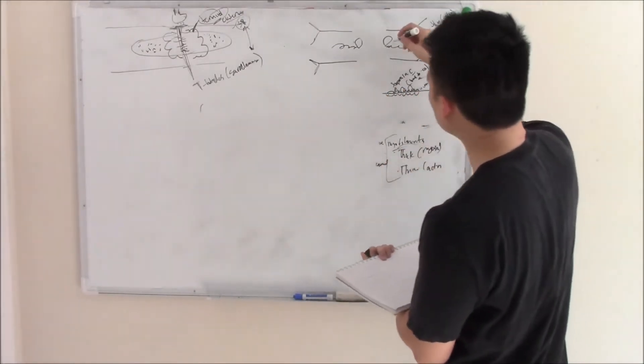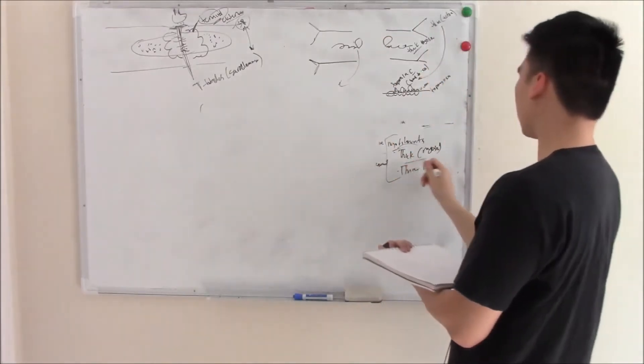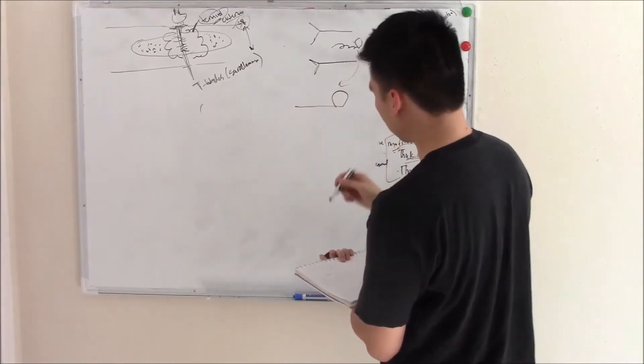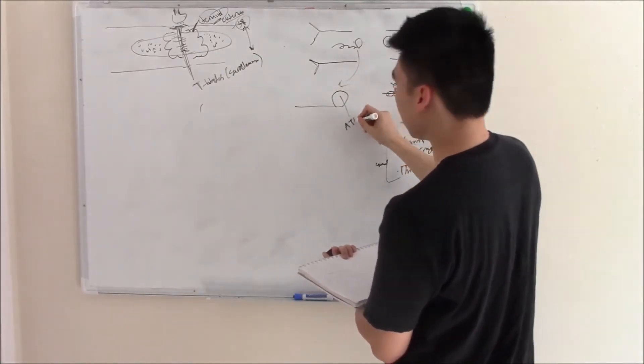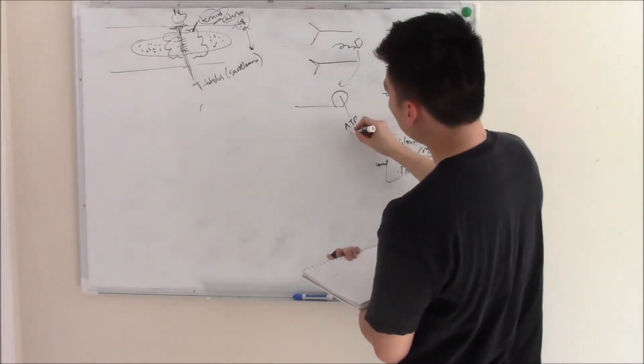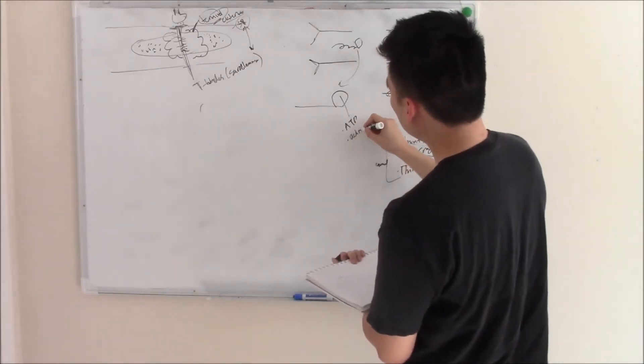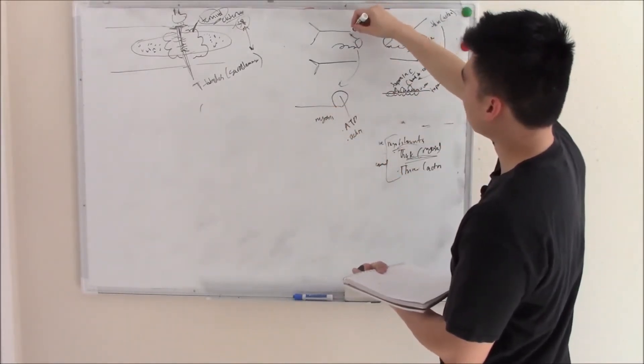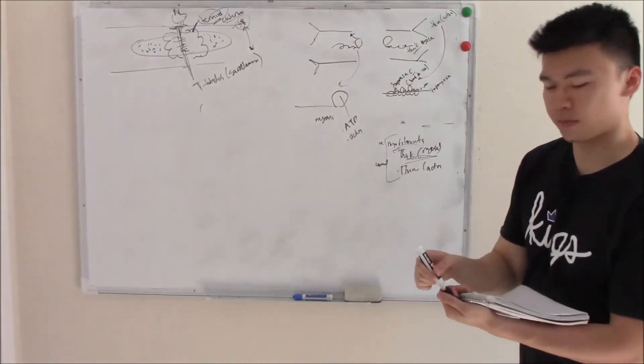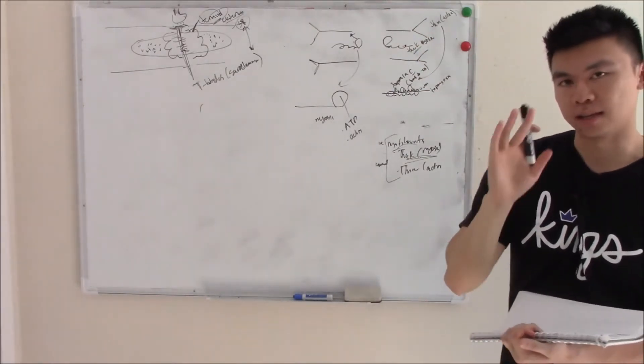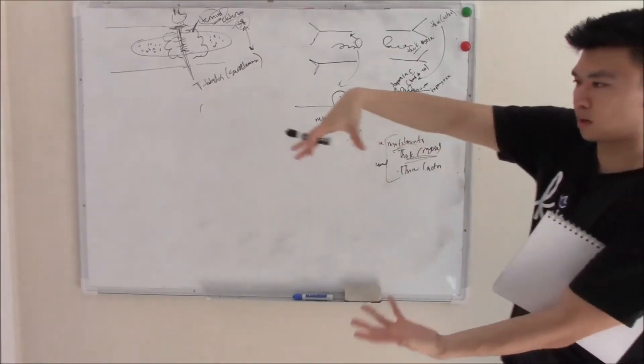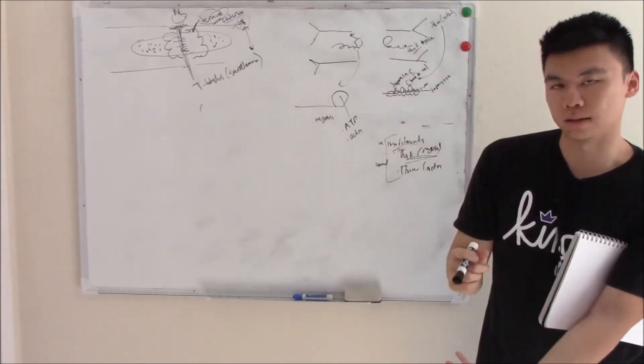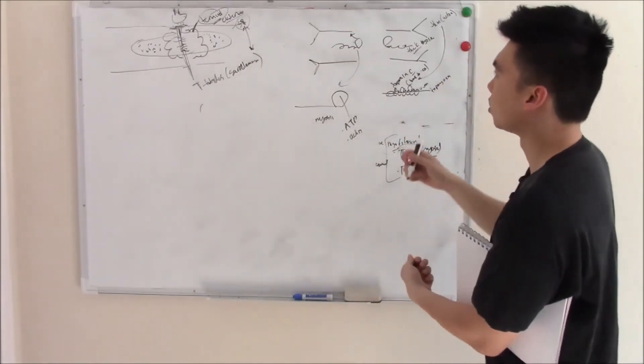Your thick filaments are made of myosin with a little head on top. The head has two binding sites: one for ATP because we need energy to contract, and one for actin. Your myosin loves to bind to actin - it's right there - but here's the problem: it can't. Tropomyosin is draped over actin, blocking the binding site until calcium is released.